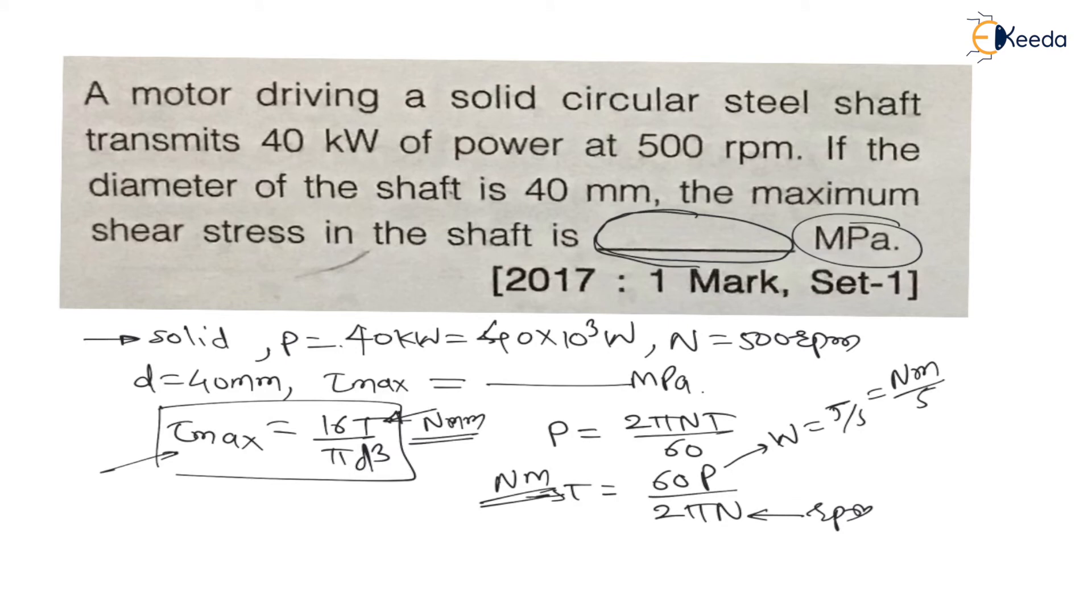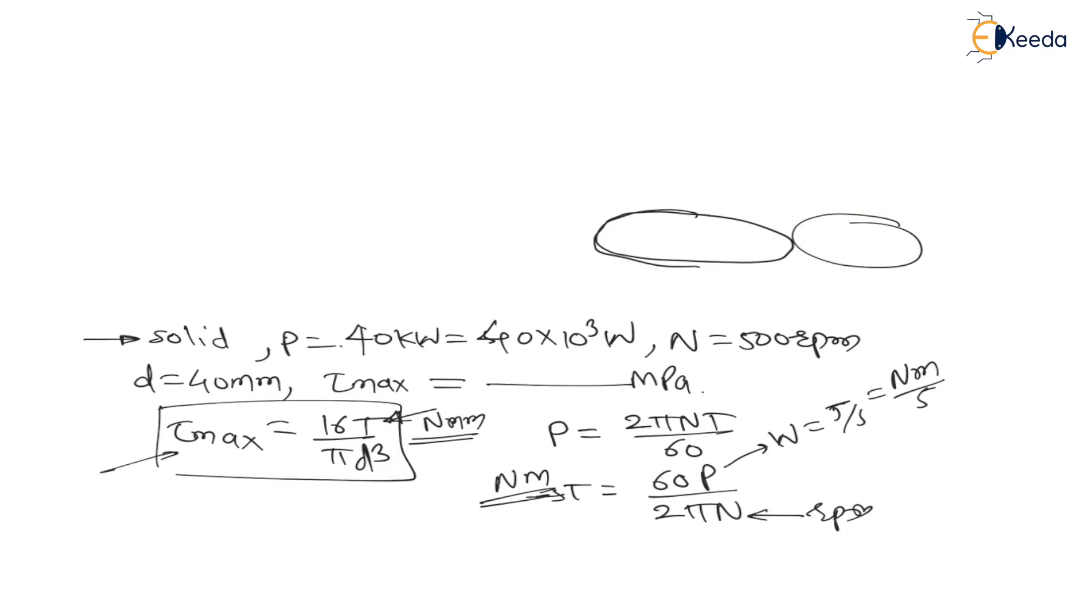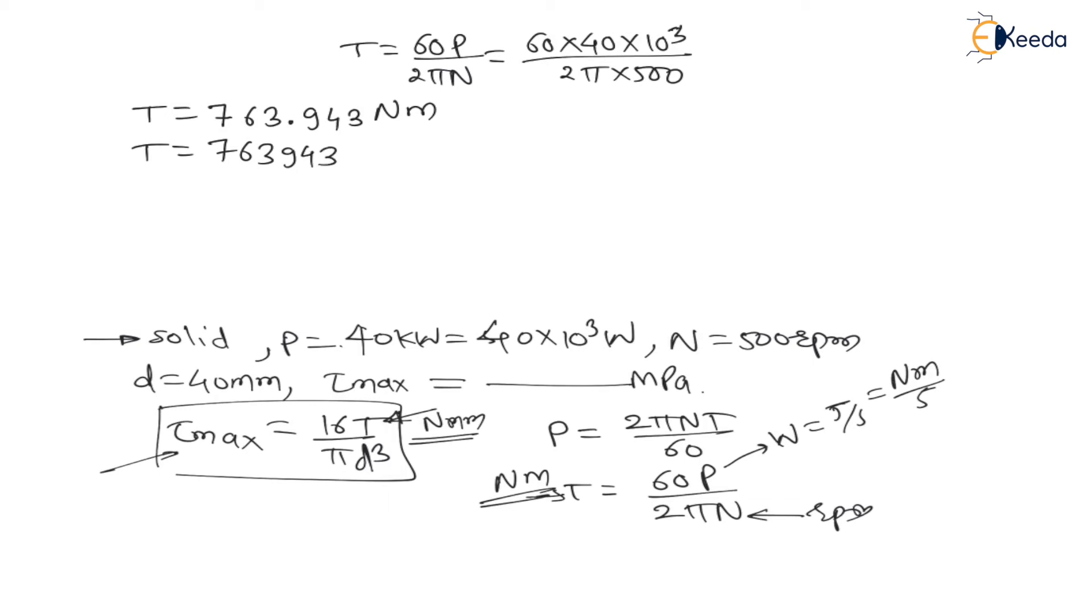Now therefore let us find torque from the power equation. Torque is equal to 60P divided by 2πN, which is 60 into 40×10³ divided by 2π into 500. If I find torque I will get the answer as 763.943 newton meter.